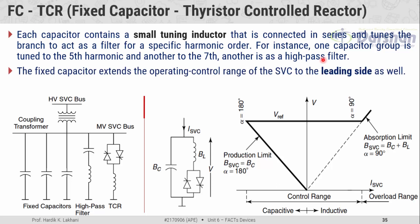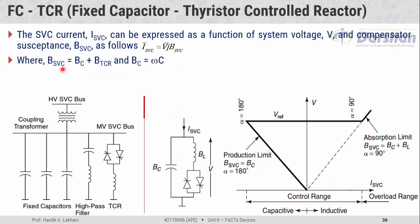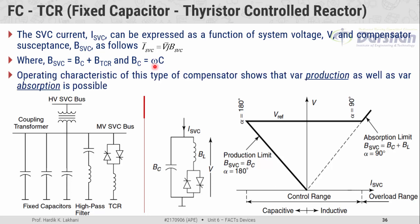The fixed capacitor extends the operating control range of SVC to the leading side as well. The SVC current I_SVC can be expressed as a function of the system voltage — the voltage across the compensator — and the susceptibility B_SVC, which is the net susceptibility offered by the fixed capacitor and thyristor controlled reactor. The current through the SVC depends on the magnitude of susceptibility offered by the SVC, where B_SVC is the combination of susceptibility offered by all capacitive branches plus susceptibility offered by the reactive branch, and B_C equals omega times C.